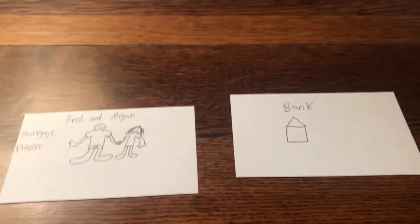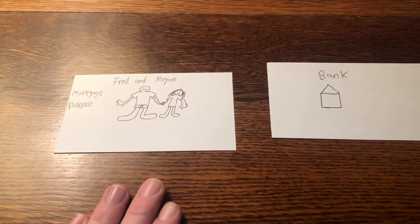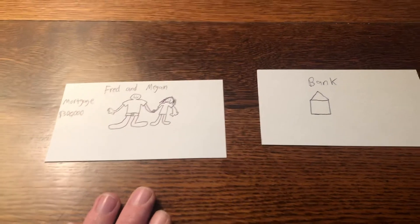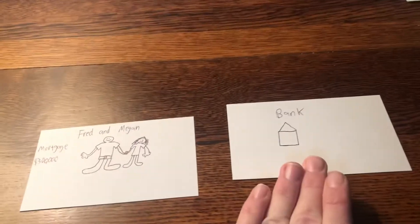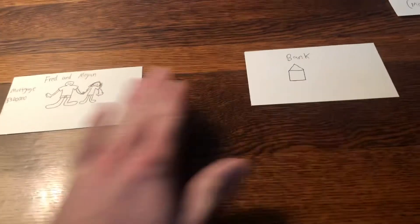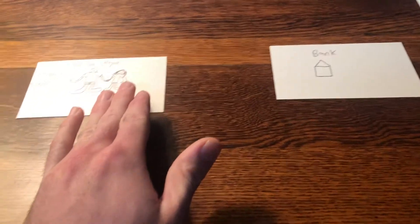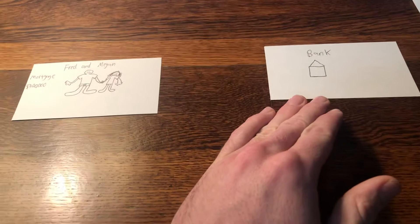They contact a bank for a loan. The bank reviews Fred and Megan's situation, their credit scores, their income, and their reliability, and they think that they will be good borrowers. So the bank loans Fred and Megan $300,000 for the mortgage. The bank gives Fred and Megan that money, and in return, Fred and Megan make monthly payments to the bank to repay that loan.